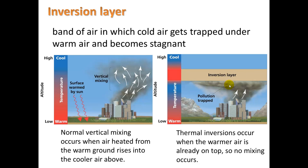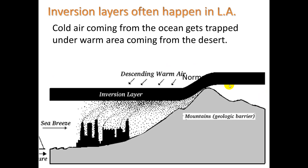Inversion layers often happen in LA. There, a cool sea breeze comes in from the coast, and mountains border the city. On the other side of the mountains is desert, so sometimes warm air comes in from the desert. This puts hot air over cold air, and since hot air rises and cold air sinks, they're already separated with no mixing occurring.